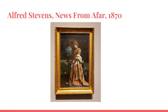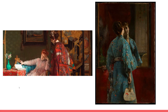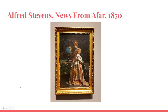News from Afar is a painting by Alfred Stevens created in 1870, and it highlights the Victorian era's view on domesticity and a woman's role as caretaker of the household. At the time, men were expected to be the breadwinners of the family and spent long hours away from home. Alfred Stevens was a Belgian painter known for his genre scenes depicting contemporary life, and his paintings often portrayed fashionable women and their social activities.